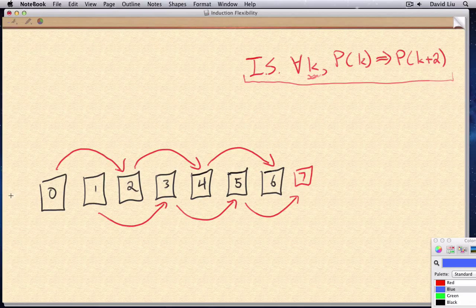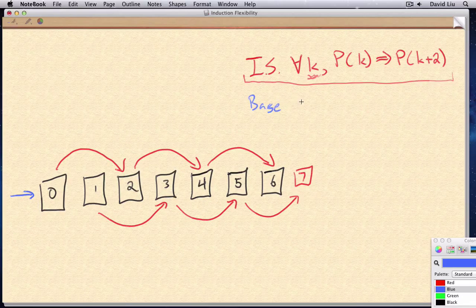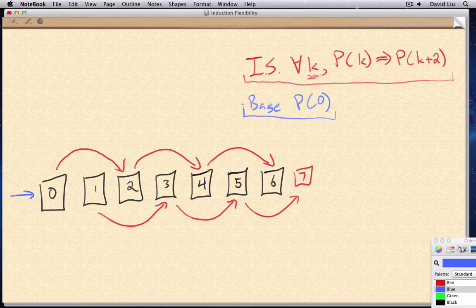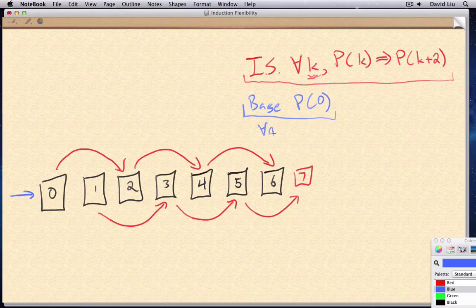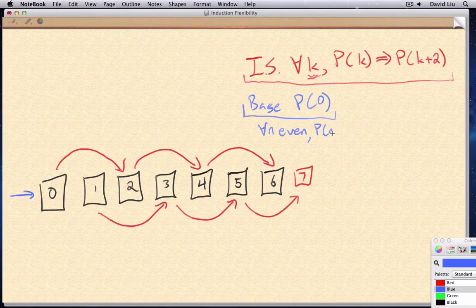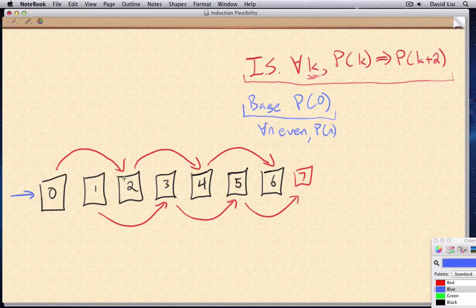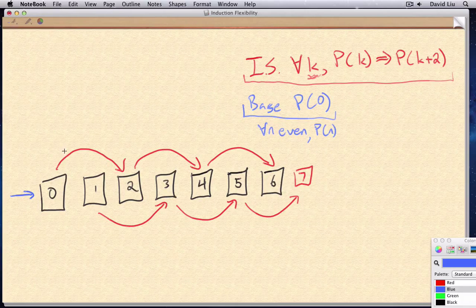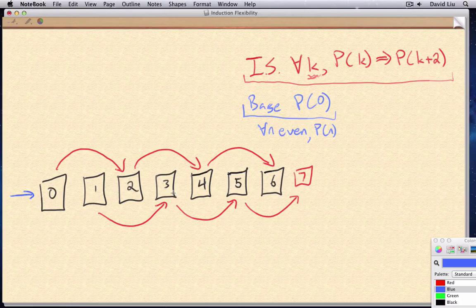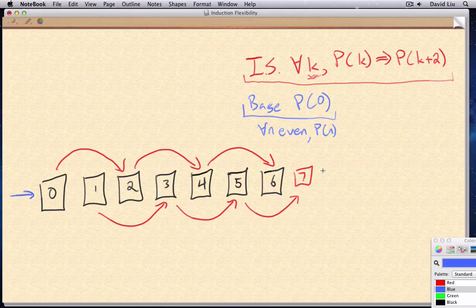On the previous slide, we had this base case p of zero. And from this and the induction step, we got that p of n was true for all even numbers. You can imagine this in our domino model as once we push down zero, then two falls, then four, then six, then eight, and we're following these top links. Never mind that these bottom links hold. If we never touch any of these odd dominoes, none of them will fall down.